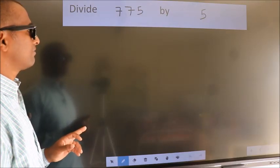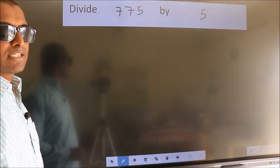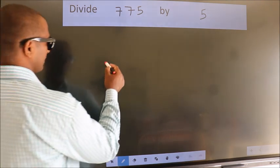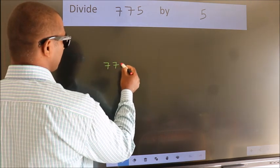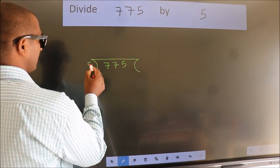Divide 775 by 5. To do this division, we should frame it in this way: 775 here, 5 here.